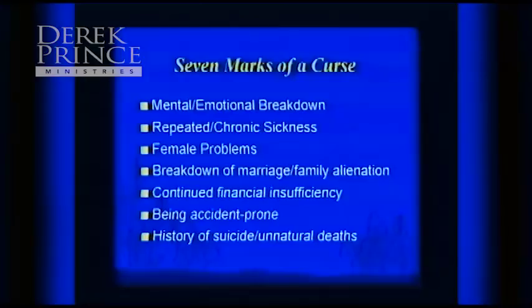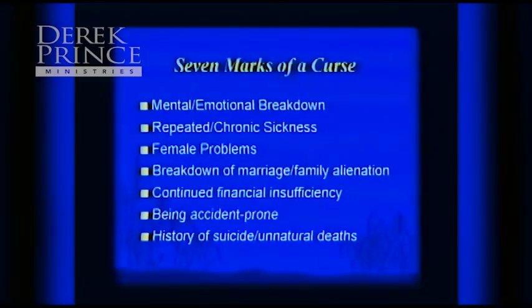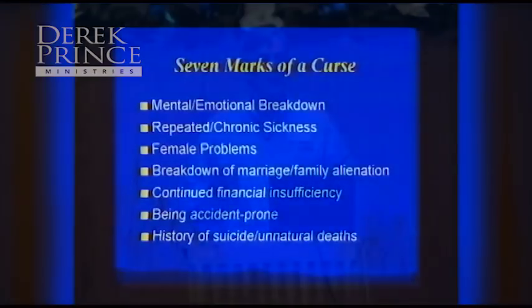Third is intense female problems — problems with menstruation, miscarriages, things like that. Fourth is the breakdown of marriage and family alienation — families that are absolutely a mess generation after generation, divorces, alienation, kids that can't stand the sight of their parents. That's not normal; that's not the will of God. Fifth is continued financial insufficiency. We all pass through financial tests, but if life is one long financial test and you never move from insufficiency to sufficiency to abundance, you may be under a curse — particularly if your dad was like that, if there's a history in your family of bankruptcy.